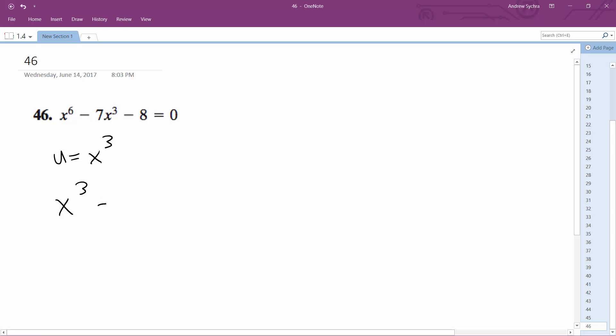Let's see if I can get started right. u squared minus 7u minus 8 equals 0, so u minus 8 and then u plus 1. So u is equal to 8 and u is equal to negative 1.